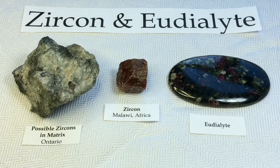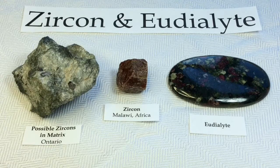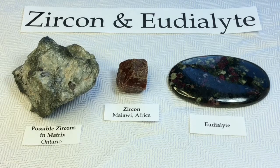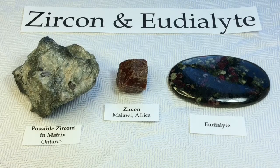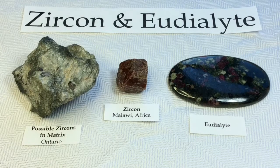Zircon is a mineral belonging to a group of nesosilicates. Its chemical name is zirconium silicate. Zircon forms in silicate melts with large proportions of high field strength incompatible elements. For example, hafnium is almost always present in quantities ranging from one to four percent. The natural color of zircon varies between colorless, yellow, golden, red, brown, blue, and green — quite a variety.